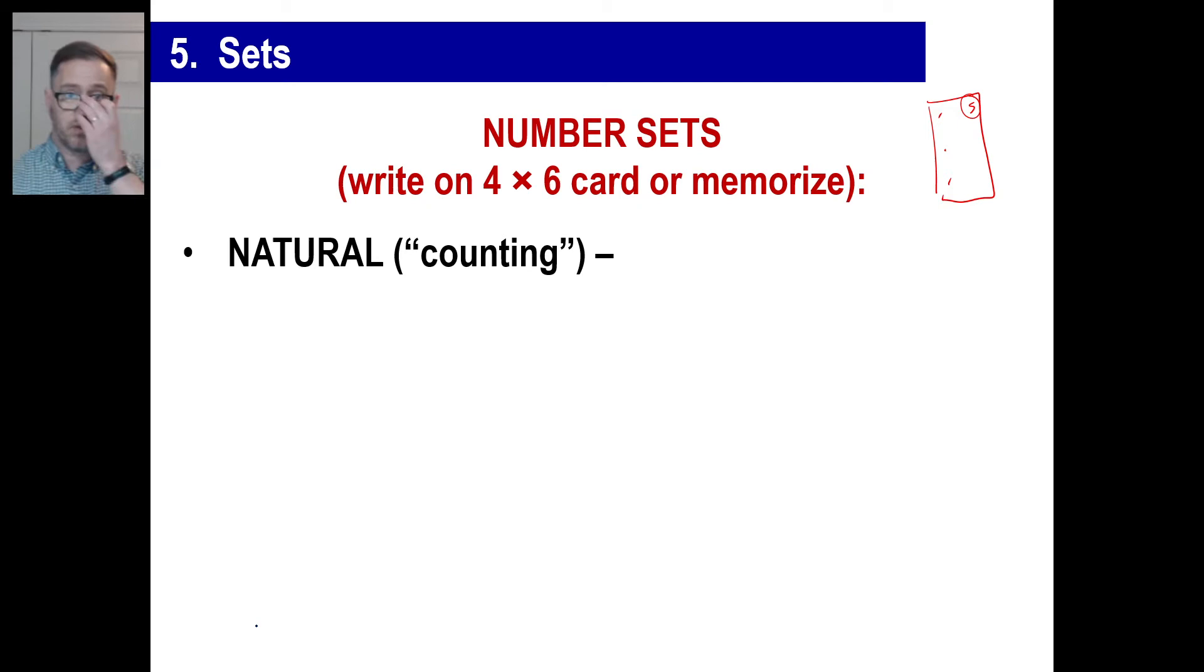First set is called the natural or counting numbers. Numbers that you naturally count with. And that set looks like this. There's our funky-looking parenthesis there. We have 1, 2, 3, and then I'm just putting an ellipsis there to indicate we just go on forever.